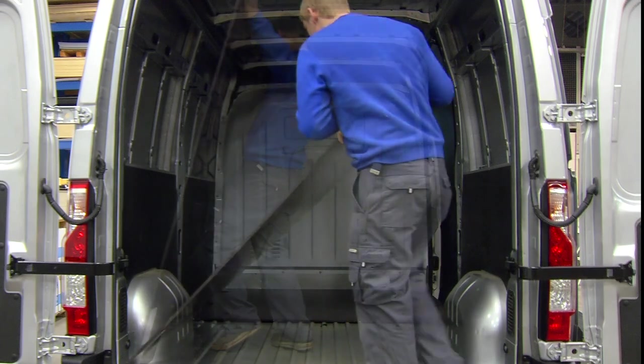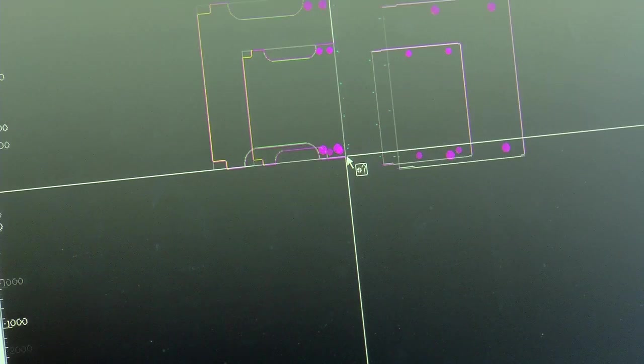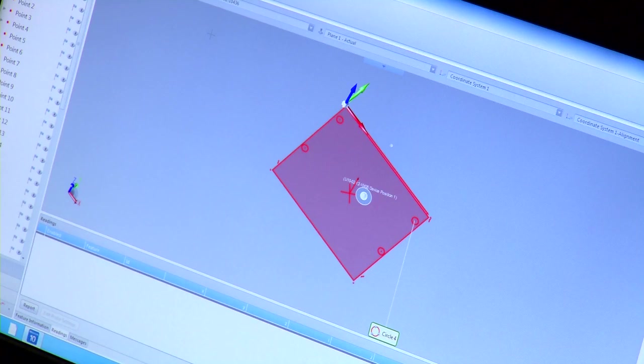To best protect the floors of the load area, the floor panel must follow each curve and cut away accurately. To do this, we use a mobile 3D measuring instrument.